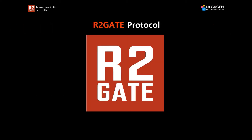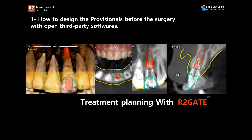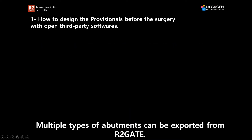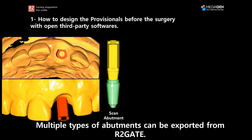Let me show you how we could do that with the R2GATE protocol. How do we design the provisionals before the surgery with open third-party softwares? In the R2GATE software, when you're treatment planning your implant, you have the option to export a lot of different types of abutments from the software. These different types of abutments could be either a scan abutment, and you could use that scan abutment and model in order to be able to design the crown before the surgery.